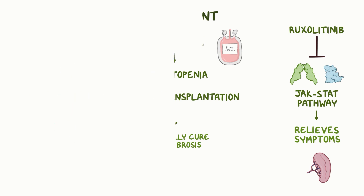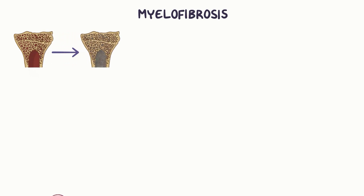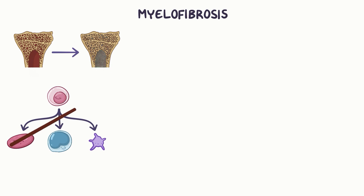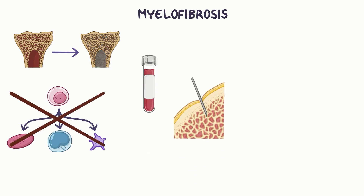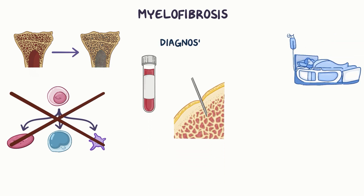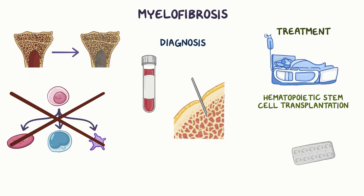As a quick recap: myelofibrosis is a rare bone marrow disorder where the bone marrow tissue is replaced with fibrotic tissue, and that interferes with blood cell production. Blood tests and bone marrow biopsy are crucial for diagnosis. It can be treated with hematopoietic stem cell transplantation and ruxolitinib.